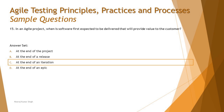Putting it all together, the right answer here is C — at the end of an iteration. We deliver the first look of the product at the end of each iteration, which is a value add to the customer.